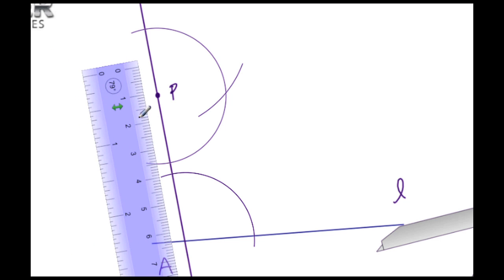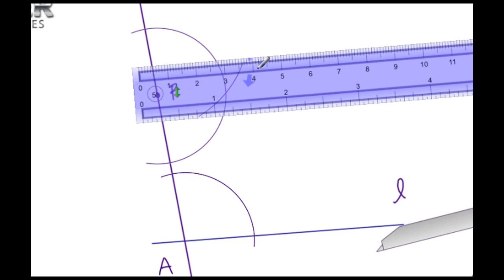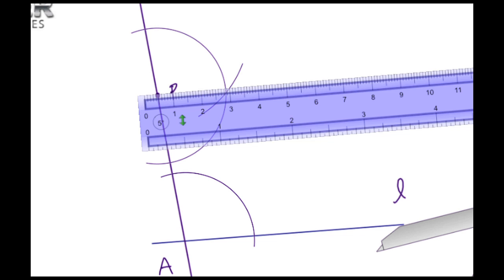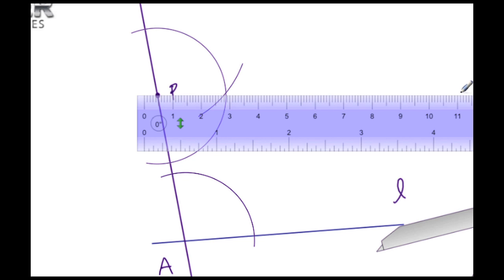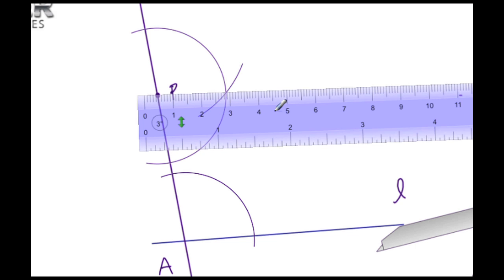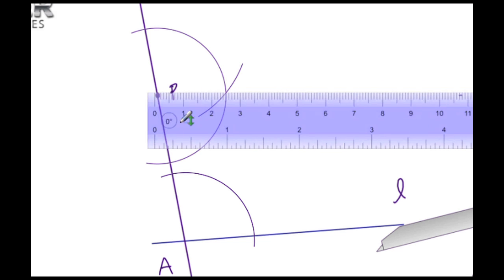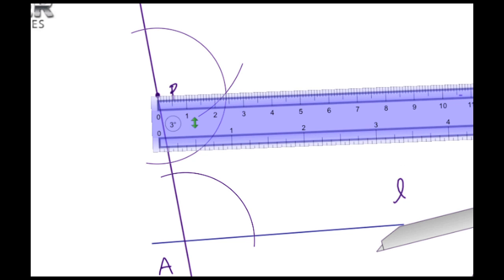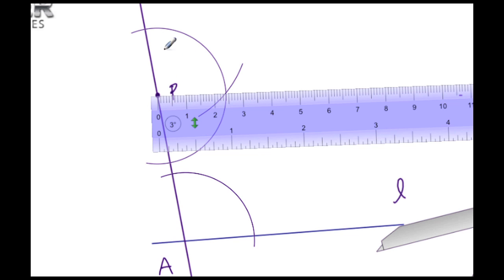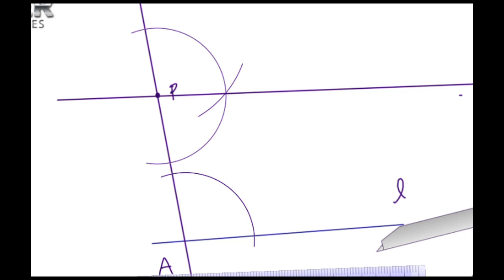So let's pull this straight edge over. Let's change this orientation, and we need it to go through point P and also through this intersection point. Let me get this more precise. That should be good enough. And now let's draw a line that intersects those two positions. Let's put these items away.